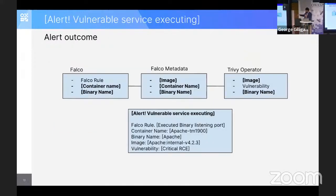So what this data gives you at the end is an alert — 'vulnerable service being executed' — mixing all this data together. In practice, you deploy Falco everywhere, you deploy the Trivy operator everywhere, and we use Elasticsearch and Python to correlate everything and produce this alert. This is just one example of the many things done in detection engineering.